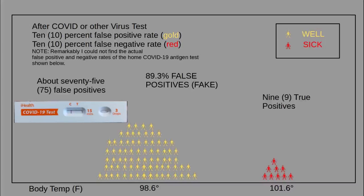Amongst other things, this means if we count as cases people with only a positive test result and ignore actual symptoms — body temperature, or running a fever in this case — we can get huge counts of cases that are mostly spurious.